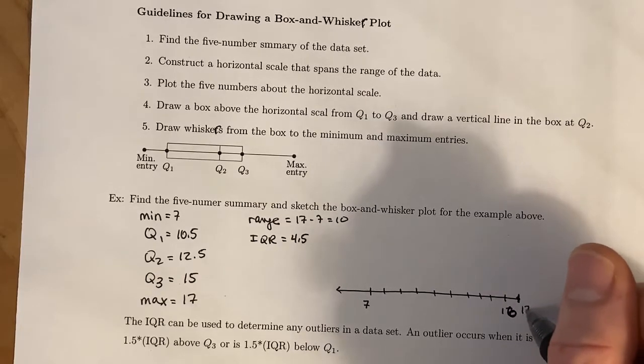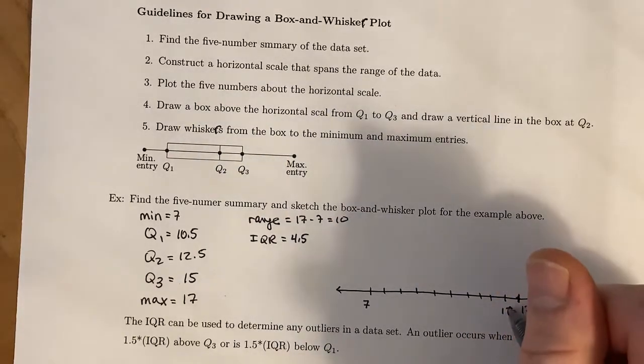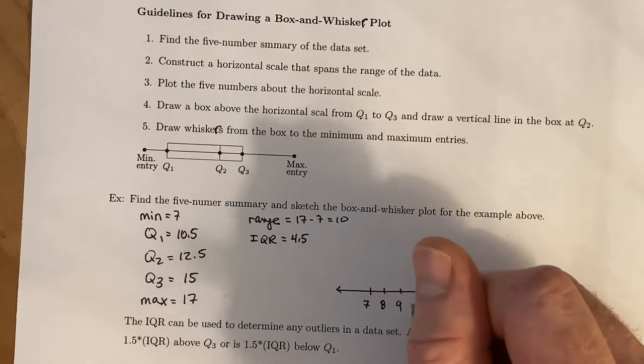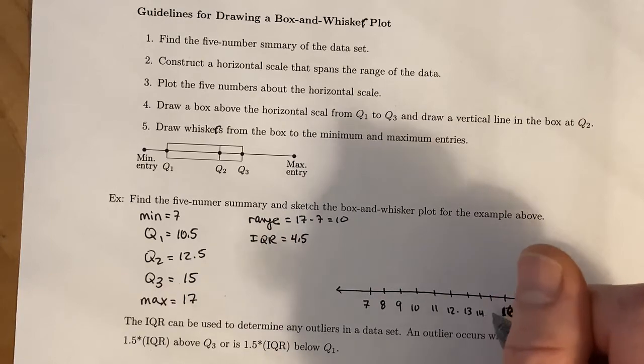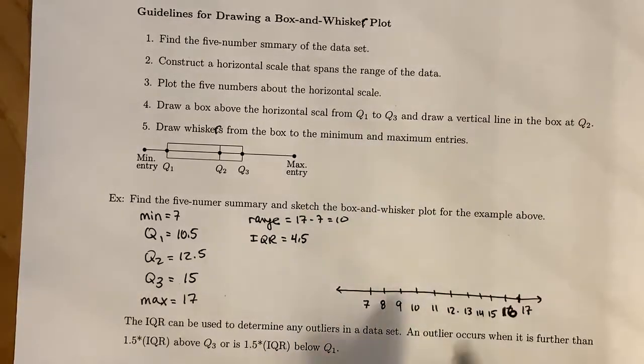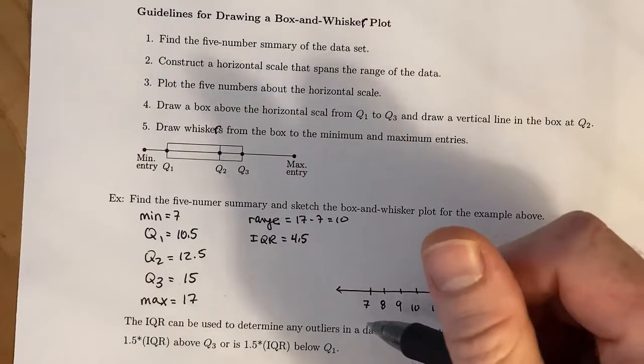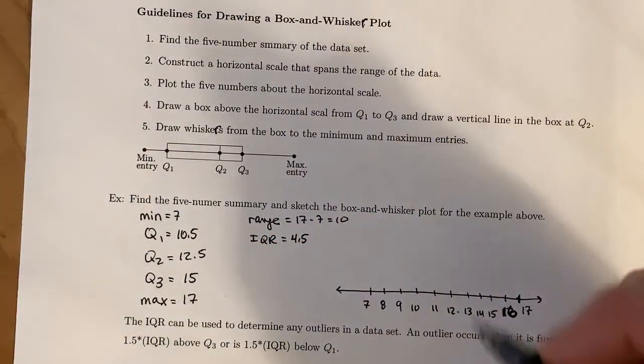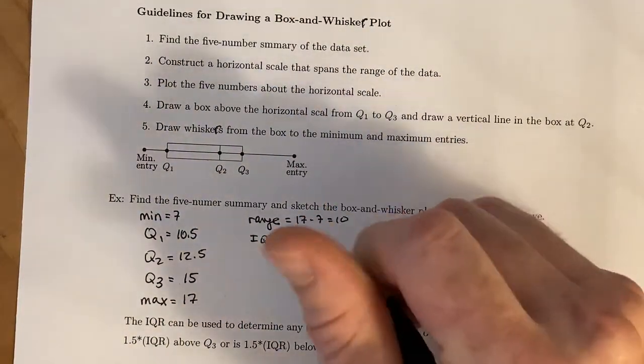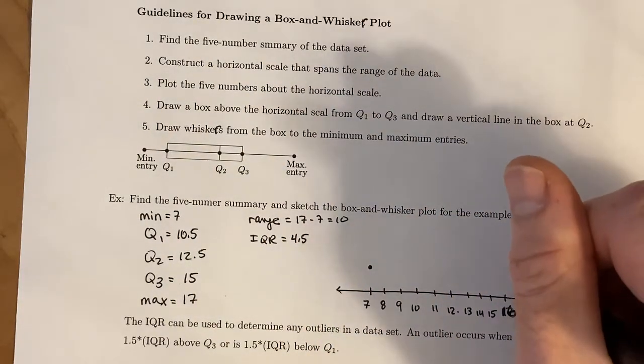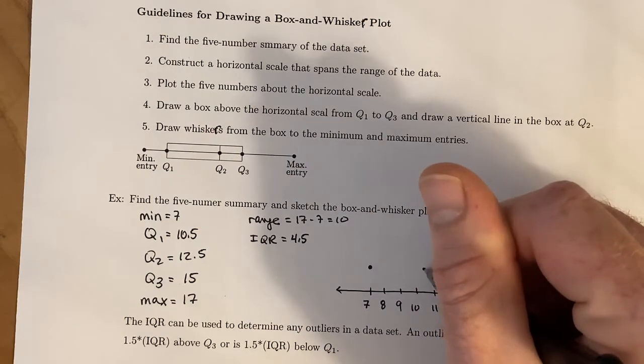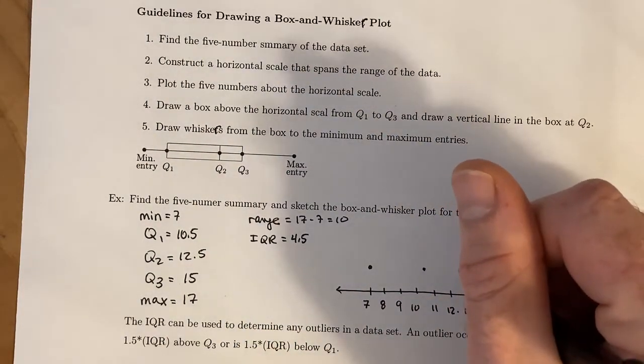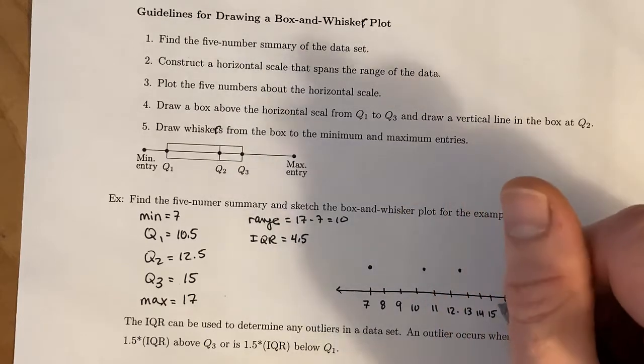We're first going to plot our five-number summary above the number line that we created. So 10.5 is halfway between 10 and 11, 12.5 is halfway between 12 and 13, and then 15 is above 15.